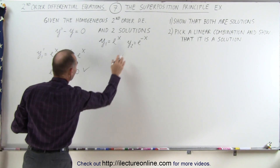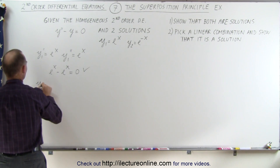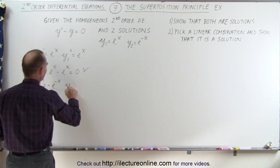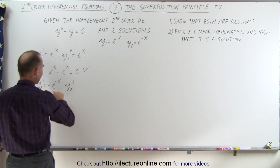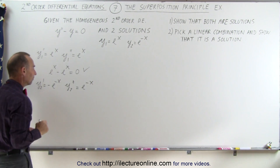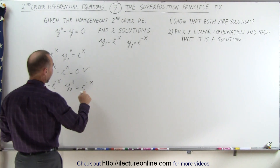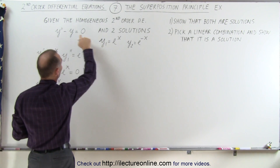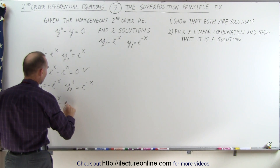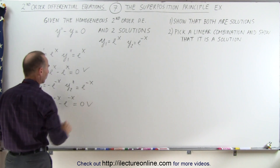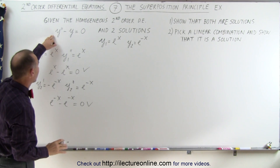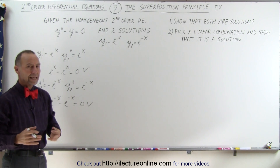Starting with the second solution, y2 prime is equal to minus e to the minus x, and y2 double prime — taking the derivative again — is positive e to the minus x, because the negatives cancel. When we plug this in for y double prime and this for y, we get e to the minus x minus e to the minus x, which is again equal to zero. So both solutions check out.